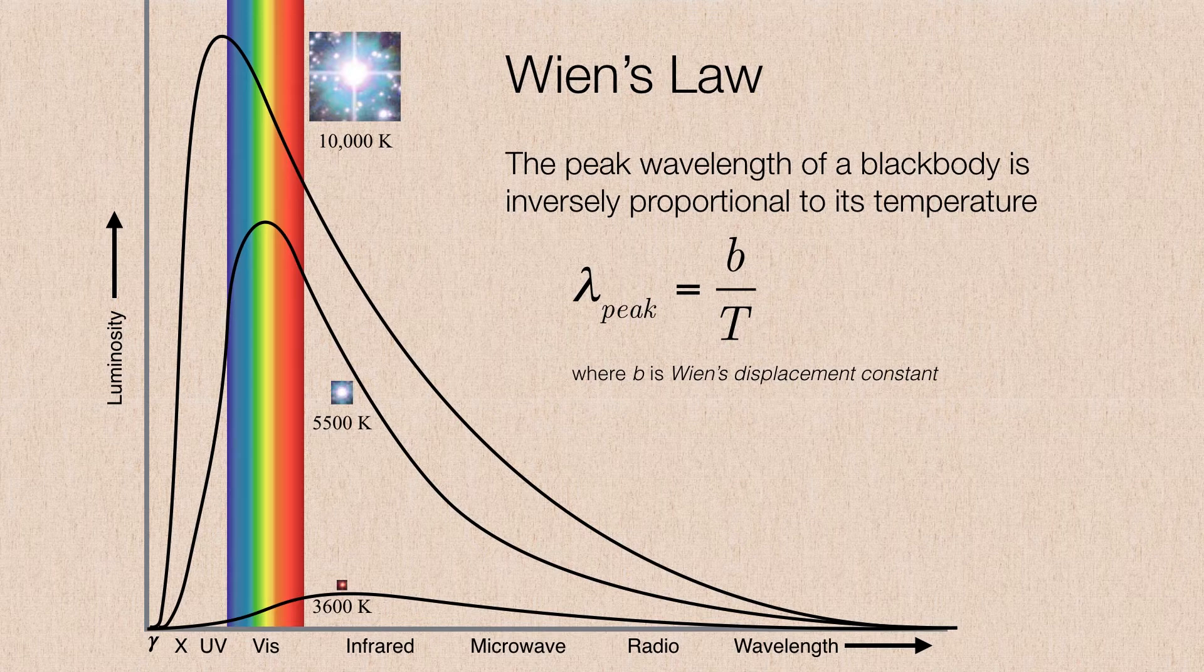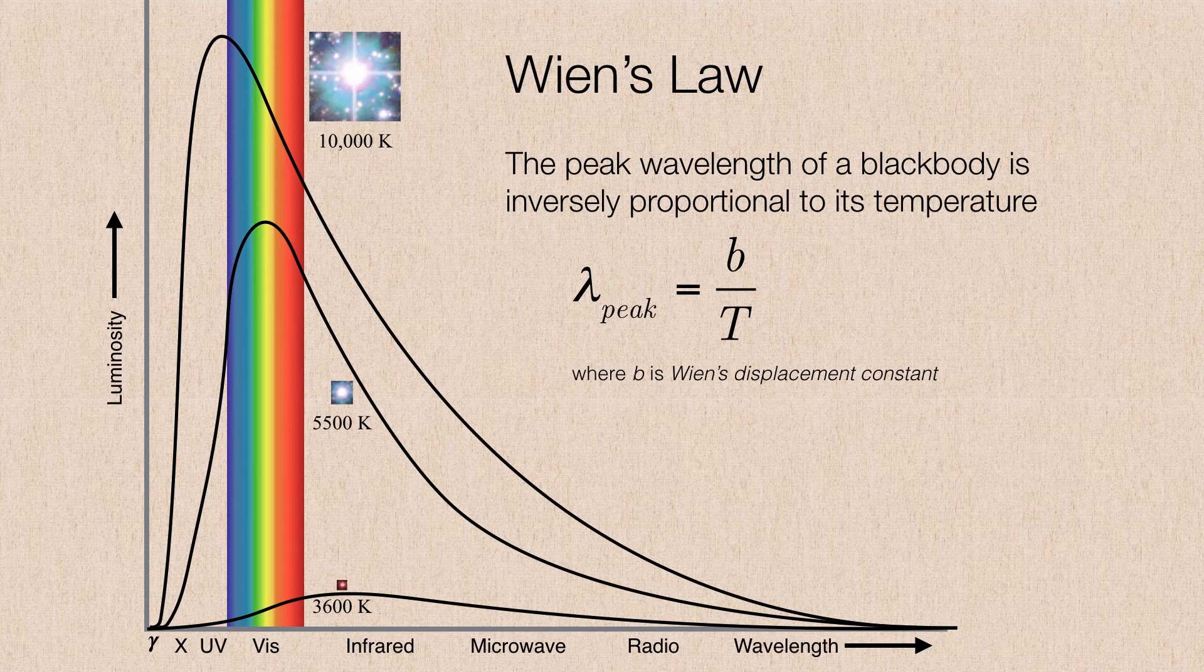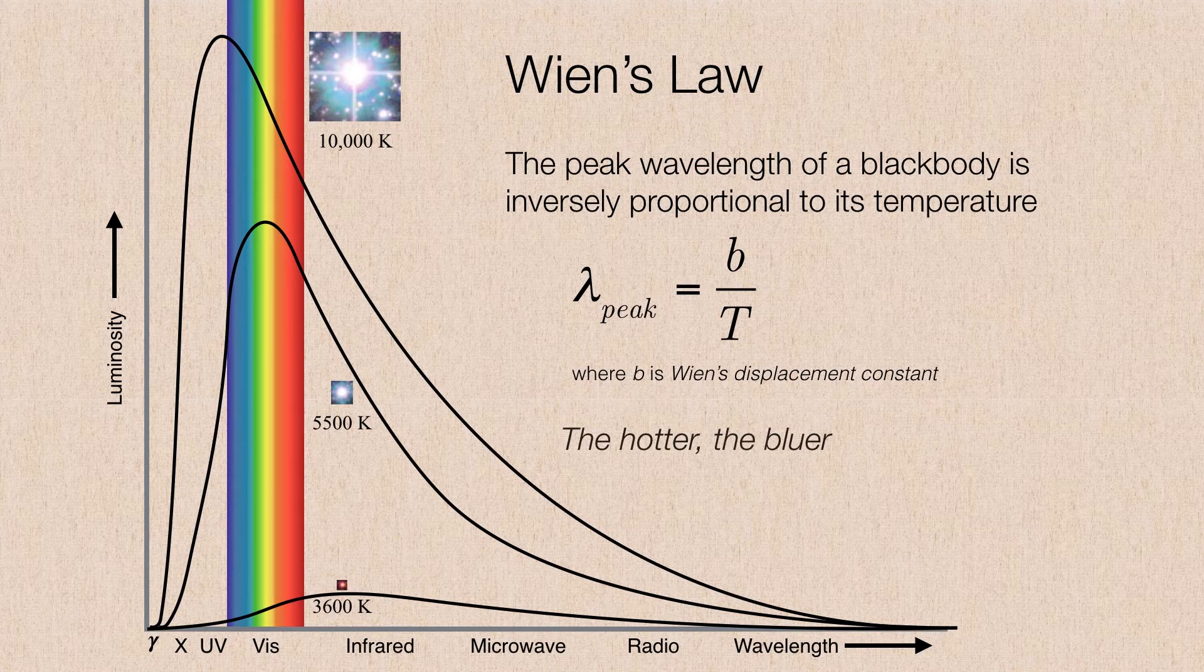So the coolest stars will shine the brightest in the infrared part of the spectrum, while the hottest stars will shine the brightest in the ultraviolet part of the spectrum. So simply stated, the hotter the star is, the bluer.